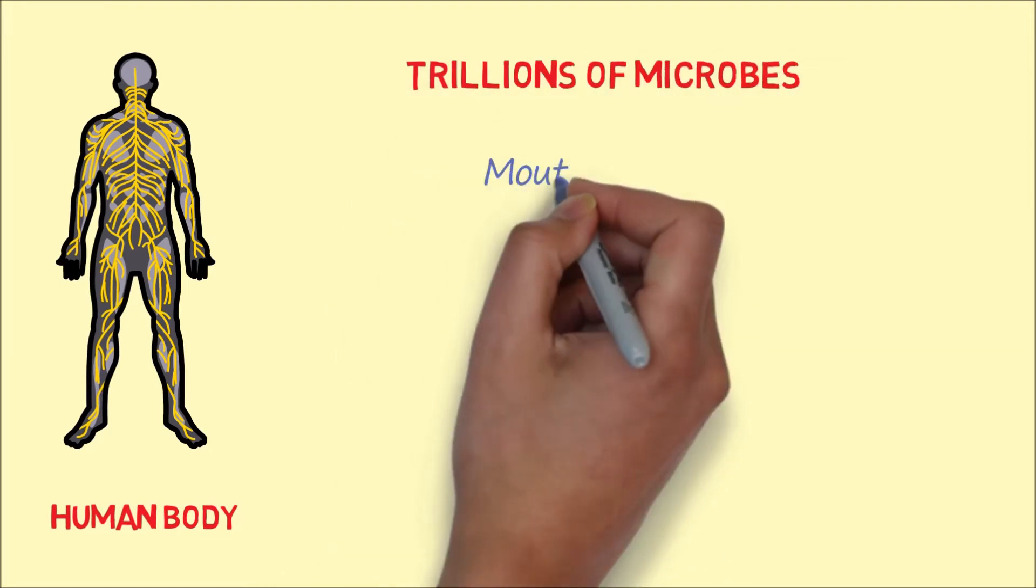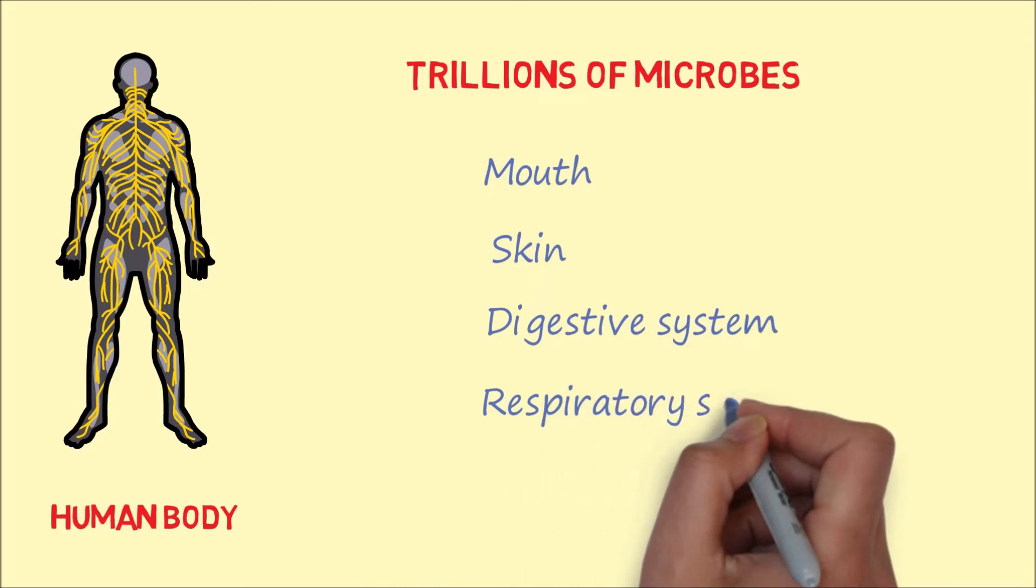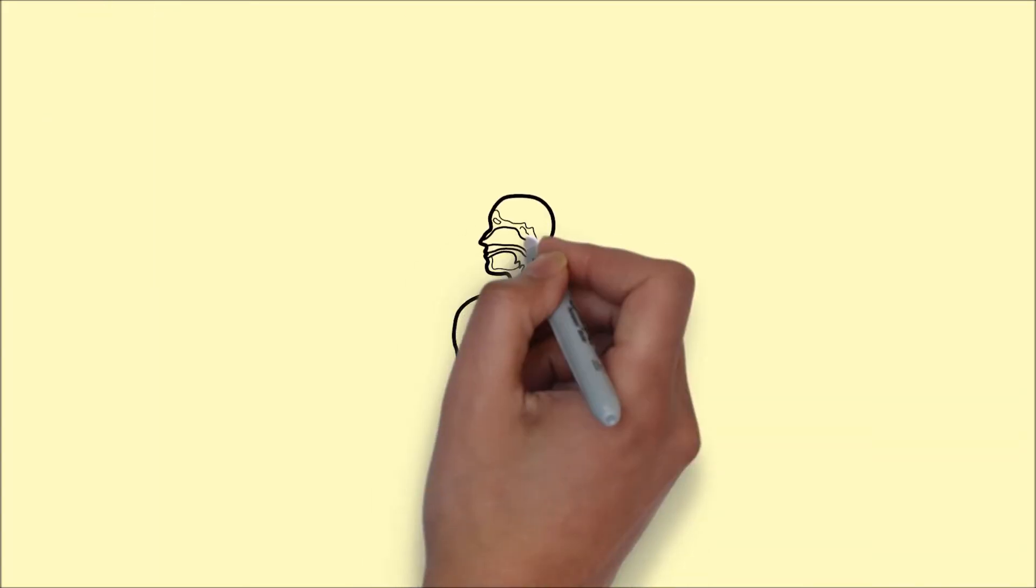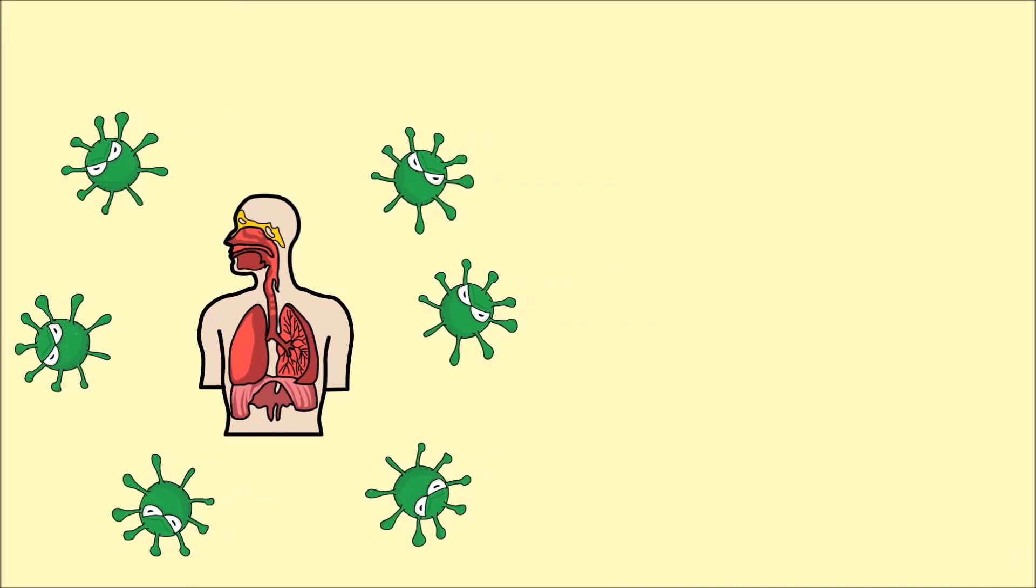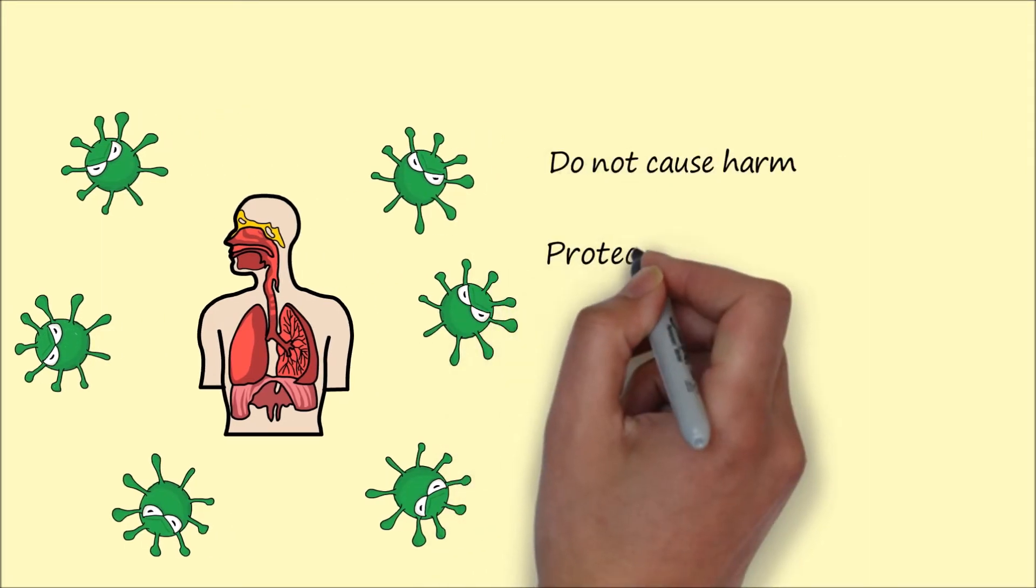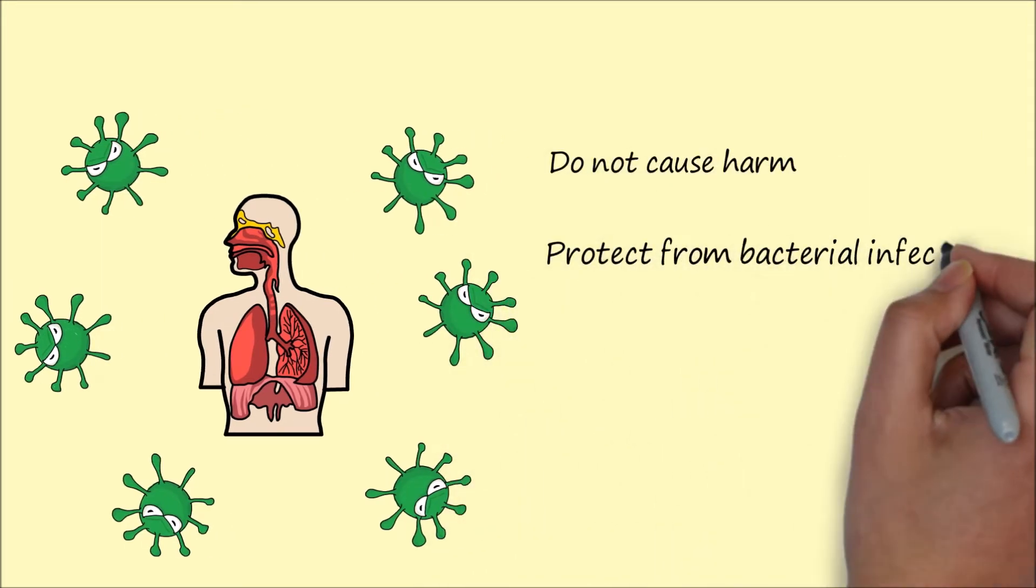These microbes are found at various sites including the mouth, skin, digestive and respiratory systems. The inner and outer surfaces of the human body are occupied with several microbes, but they do not cause any harm. In fact, they protect the body from other bacterial infections.